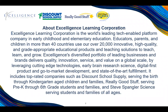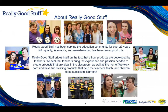Acceligence includes top-rated companies such as Discount School Supply serving birth through K-age children and families, Really Good Stuff serving pre-K through sixth grade students and families, and Steve Spangler Science serving students and families of all ages. Really Good Stuff has been serving the education community for over 25 years with quality, innovative, and award-winning teacher-created products. We work hard creating products that help teachers teach and children be successful learners.